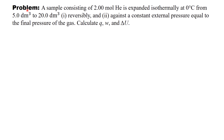Here's the problem. A sample consisting of 2.00 moles of helium gas is expanded isothermally at 0 degrees Celsius from an initial volume of 5.0 cubic decimeters to a final volume of 20.0 cubic decimeters. We need to calculate Q, W, and ΔU for two cases: 1. Reversible expansion. 2. Expansion against a constant external pressure equal to the final pressure of the gas.